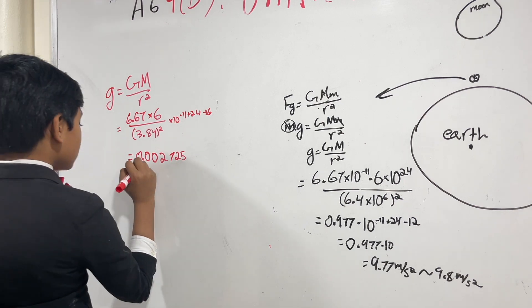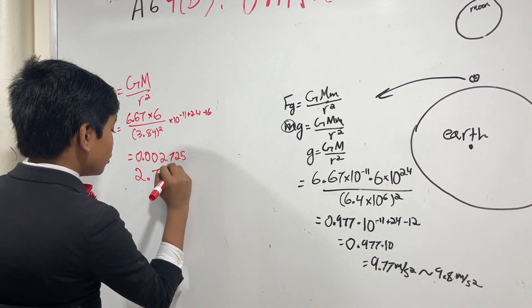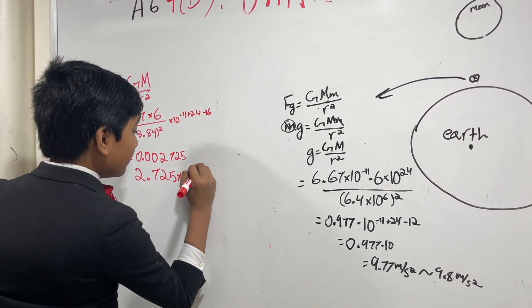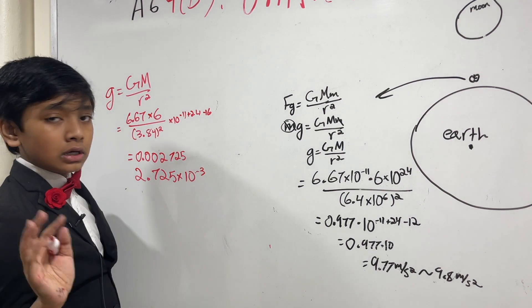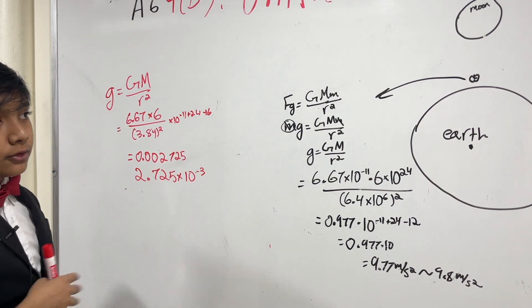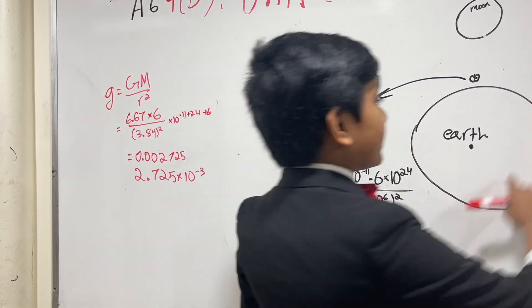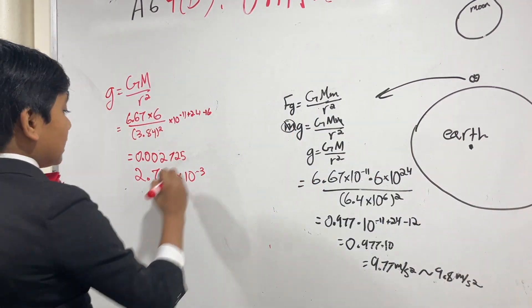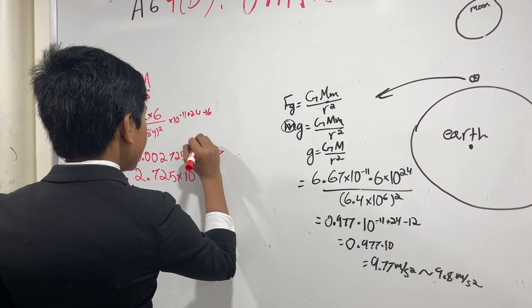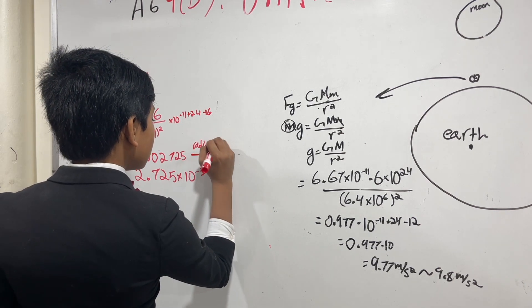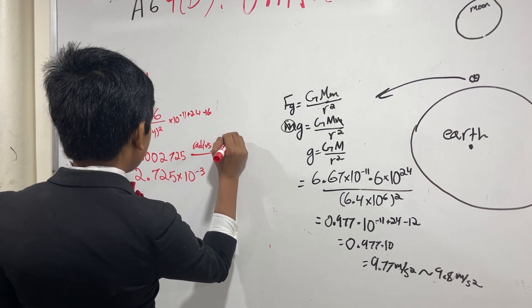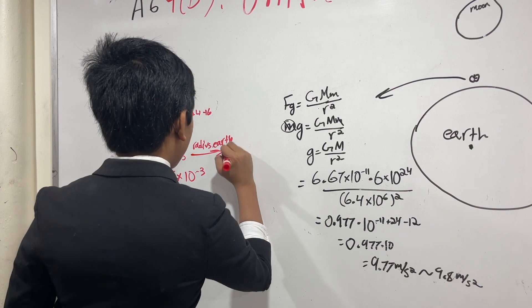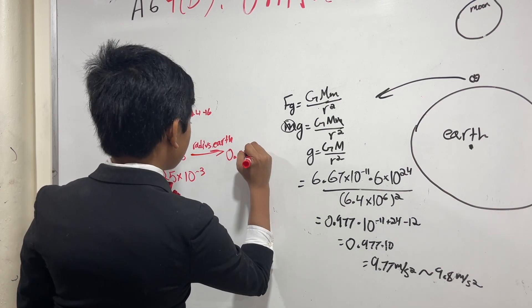Or in other words, 2.72 times 10 to the negative 3rd power. And for all of you saying that we should take this into account, that doesn't really make a difference. Because taking the Earth's radius into account, we get about 0.0026, which is barely even a difference.